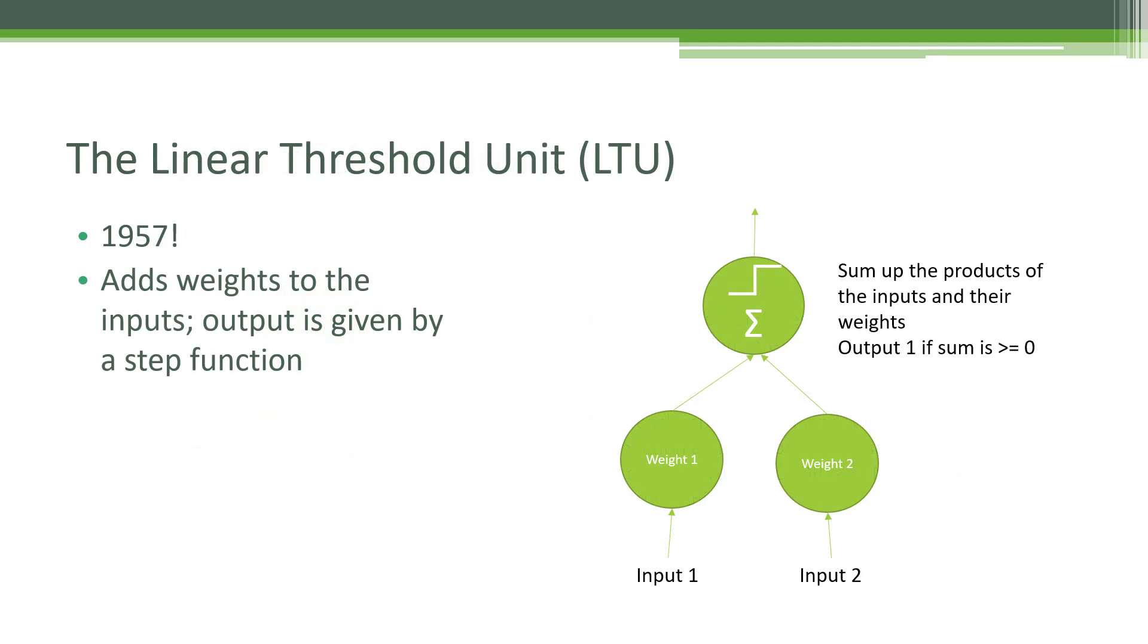Then we started to build upon this idea. We created something called the Linear Threshold Unit or LTU in 1957. This just built on things by assigning weights to those inputs. So instead of just simple on and off switches, we now have the concept of having weights on each of those inputs that you can tune further. Different connections between different neurons may have different strengths, and we can model those strengths in terms of weights.